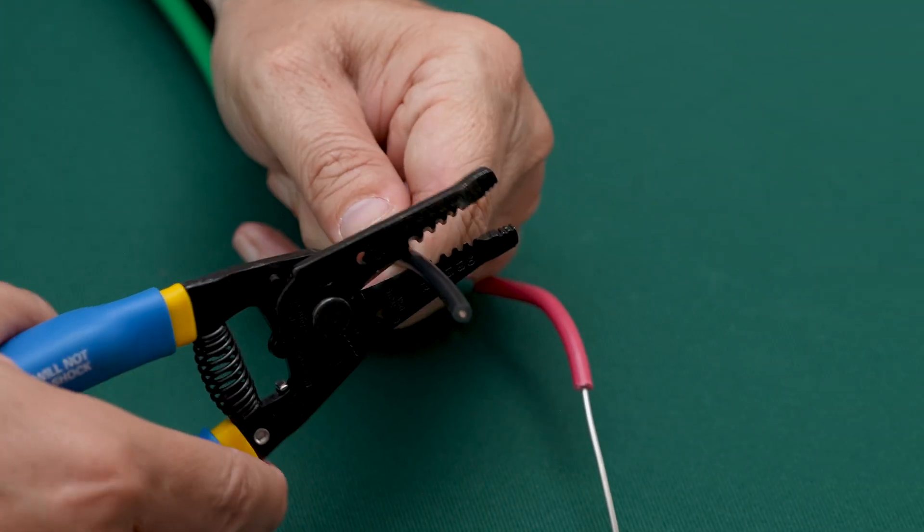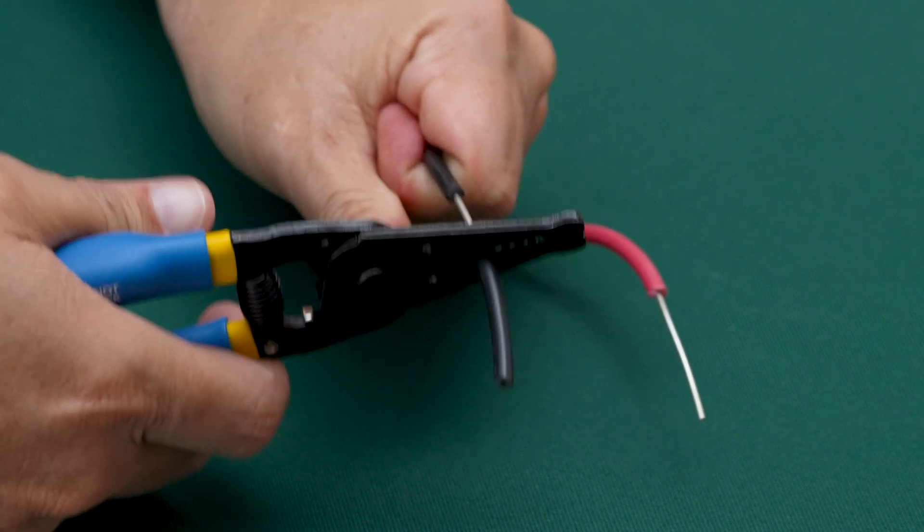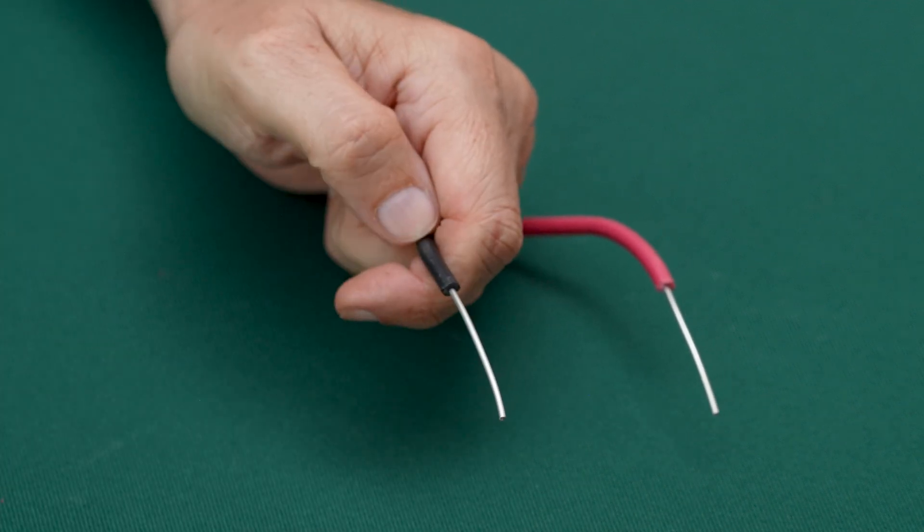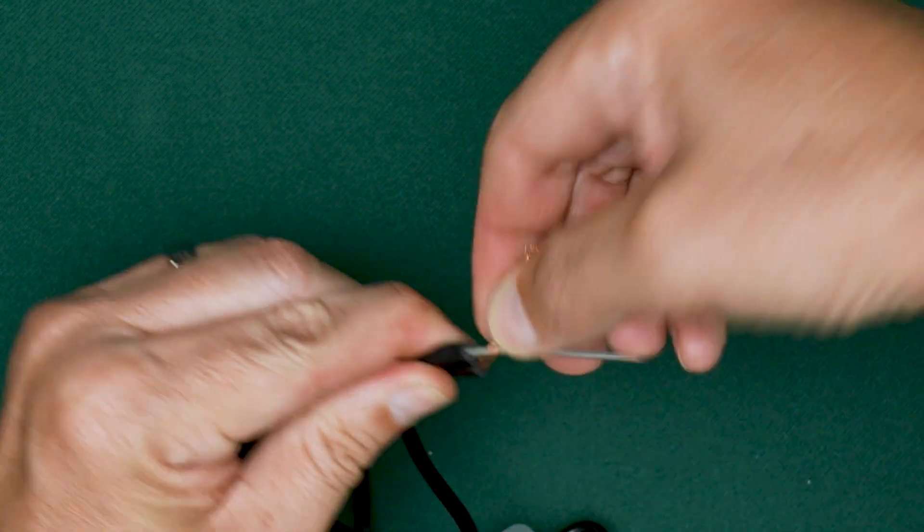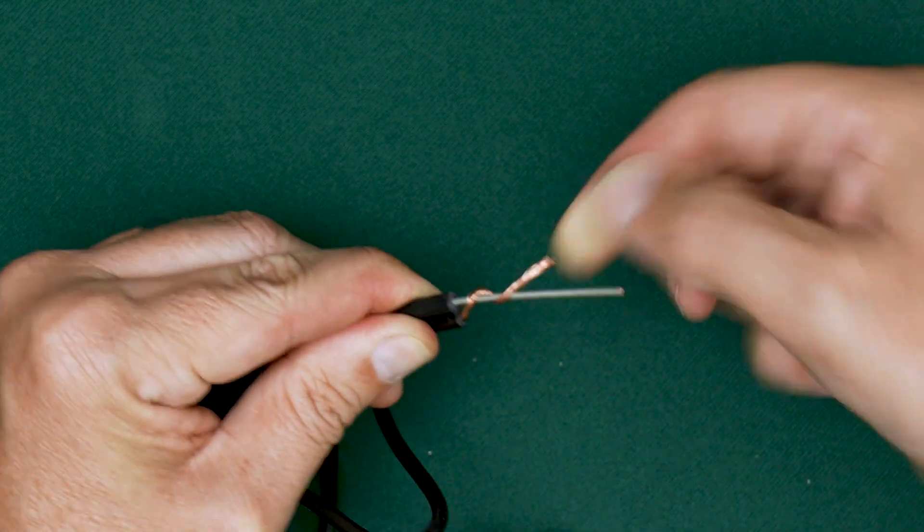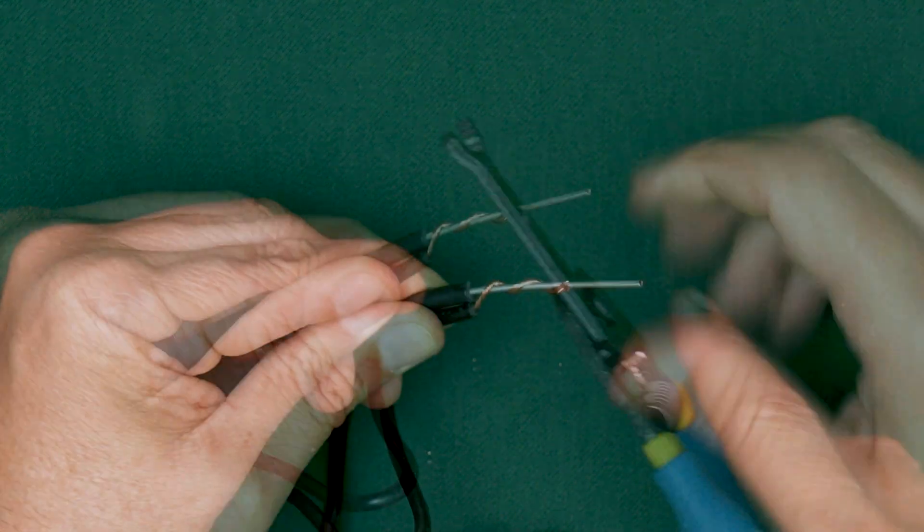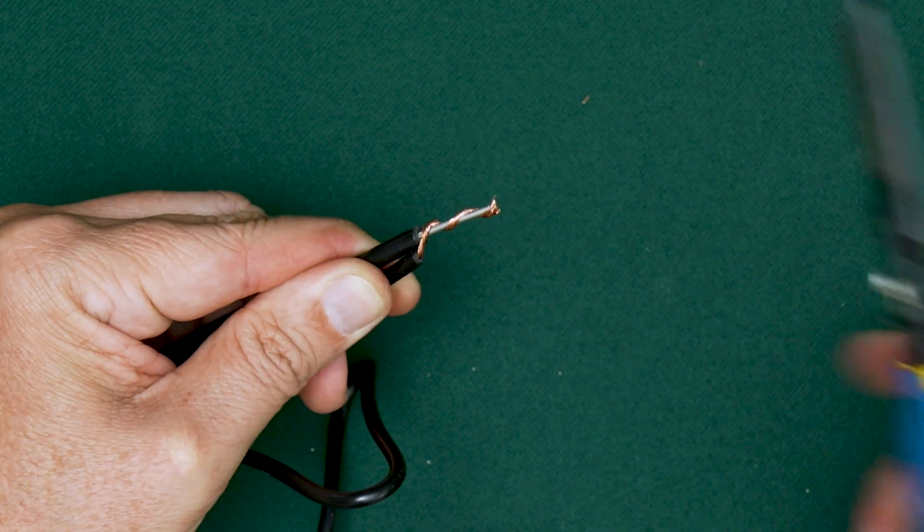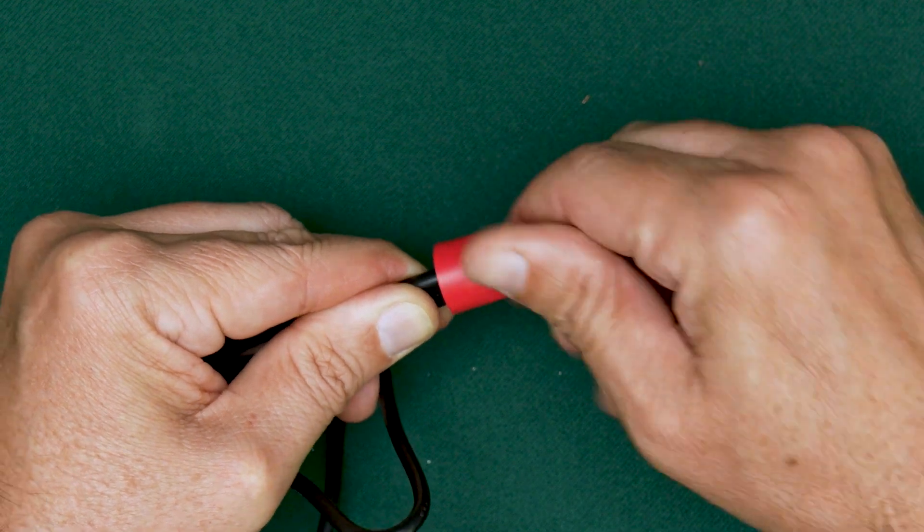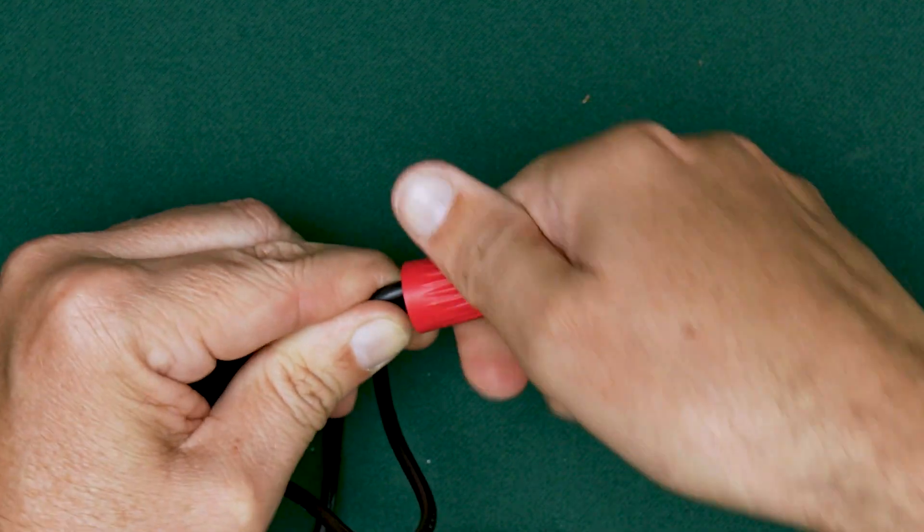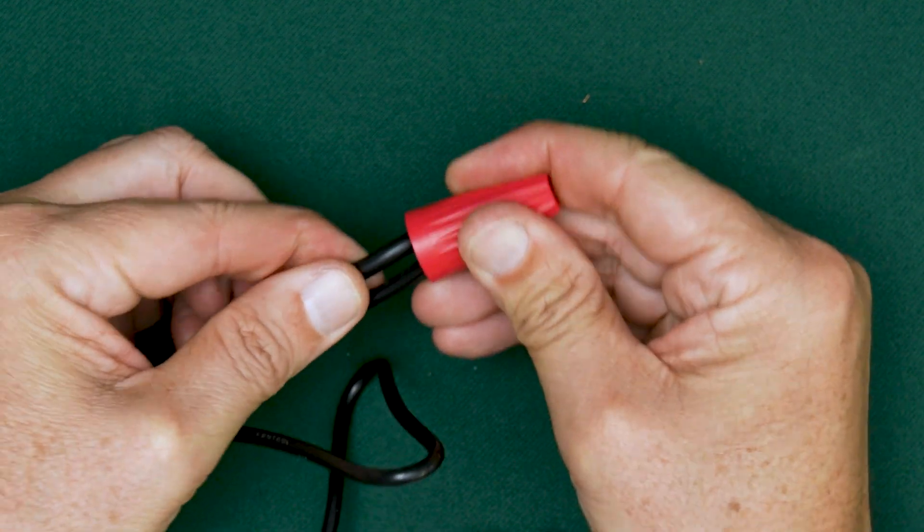For an end of line splice, follow the same process. Strip the cable and IC module lead. Twist the lead along the conductor in a clockwise position. Then trim to 5 eighths of an inch. Apply the wire nut and tug on each wire to ensure it's locked in.